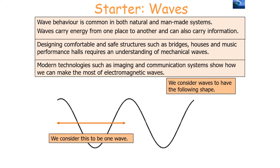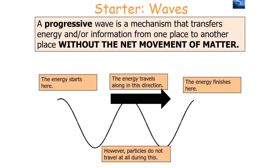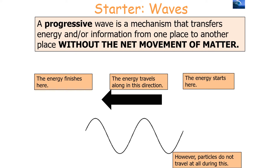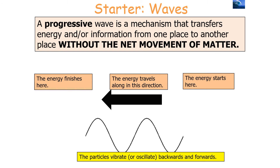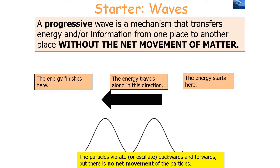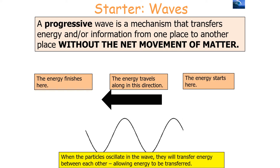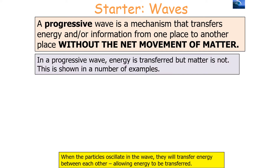A progressive wave is a mechanism that transfers energy and/or information from one place to another without the net movement of matter. It's very important to note that whilst energy travels in a direction, the particles only oscillate — they move backwards and forwards, they do not travel. The particles vibrate or oscillate backwards and forwards, but there is no net movement. When the particles oscillate, they transfer energy between each other, allowing energy to be transferred. In a progressive wave, energy is transferred but matter is not.